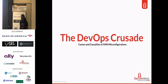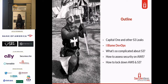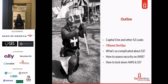Welcome to the DevOps Crusade: the causes and casualties of AWS misconfigurations. Here's what we're going to cover. Since this is a security talk, I'm going to start off with some victim shaming, and then go into a rant on why I blame DevOps for security issues. That is followed by the technical side of the talk, where I explain the complexities of permissions in AWS. I'll also go over tools and tips on how to assess your account security in AWS for free, and then conclude with steps on how you can lock down your AWS account.